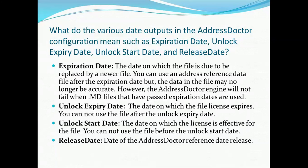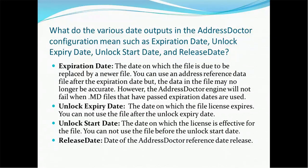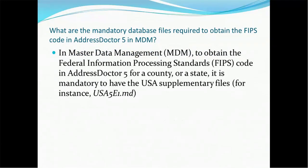The unlock expiry date is the date on which the file license expires. After that date you are not able to use Address Doctor at all. The unlock start date is the date on which the license becomes effective for the file — you cannot use the file before the unlock start date. This is for internal Address Doctor implementation purposes, since the license start date is set from the time we receive it. The release date is the date on which the Address Doctor reference data was released.